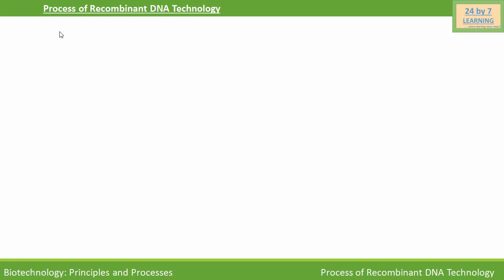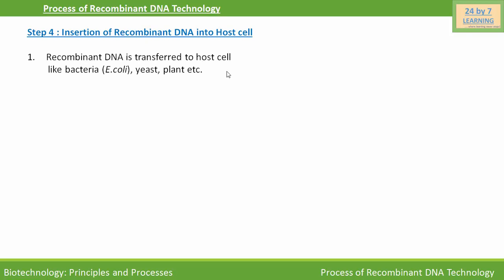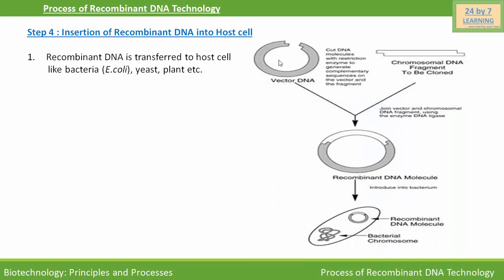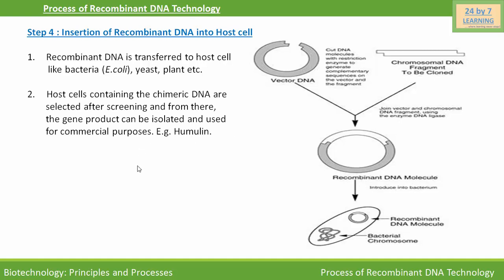Now come to the fourth step of recombinant DNA technology, i.e. insertion of recombinant DNA into a host cell. Recombinant DNA is transferred to a host cell like bacteria, yeast, plant, etc. As you can see in the diagram, the chromosomal DNA fragment to be cloned is the desired DNA, and this is the vector DNA. The vector is always a carrier molecule for the desired DNA. After joining the vector DNA and desired DNA with the enzyme DNA ligase, you get a recombinant DNA molecule, also called chimeric DNA, which gets inserted into a bacterial host cell. The recombinant DNA will also replicate with the bacterial DNA. The host cells containing chimeric DNA are selected after screening, and from there the gene product can be isolated and used for commercial purposes — for example, humulin, the insulin produced by humans using recombinant DNA technology.